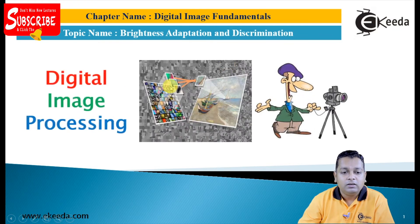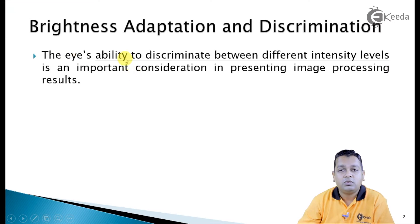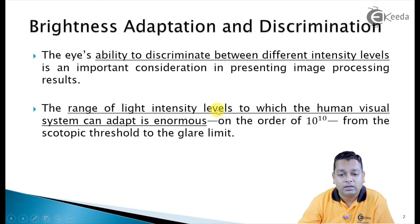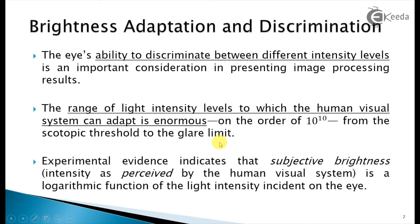The eye's ability to discriminate between different intensity levels is an important consideration in presenting image processing results. The range of light intensity levels to which the human visual system can adapt is enormous — on the order of 10 to the power 10, from the scotopic threshold to the glare limit. Experimental evidence indicates that subjective brightness, as perceived by the human visual system, is a logarithmic function of the light intensity incident on the eye.